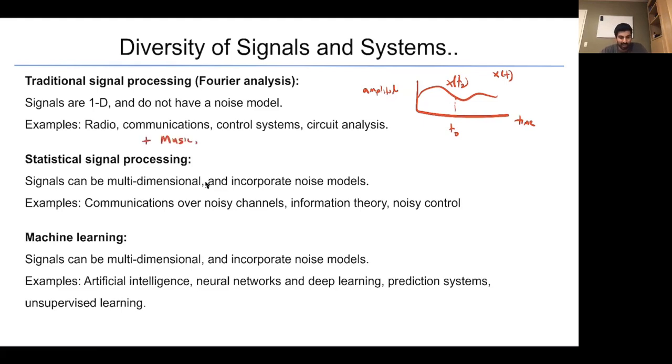Going down the list, we have another kind of diversity called statistical signal processing, where signals are multi-dimensional and incorporate noise models. Examples include communication over noisy channels, information theory control, noisy control, as well as imaging.